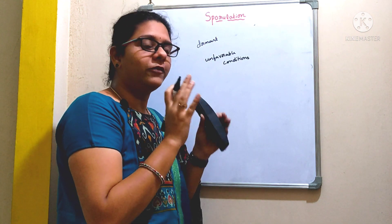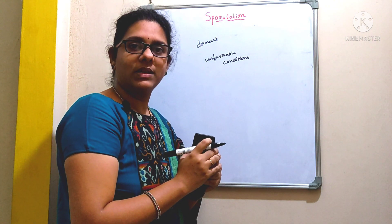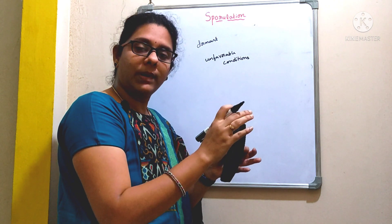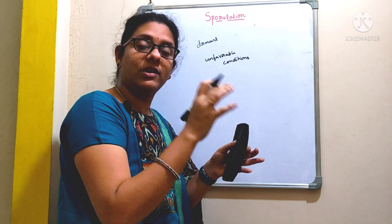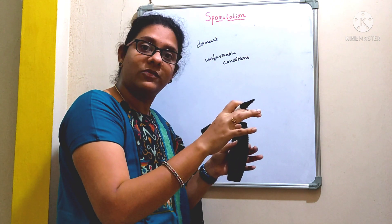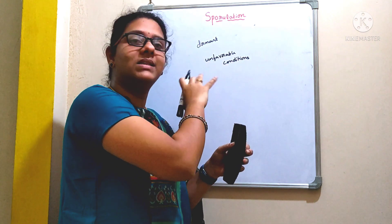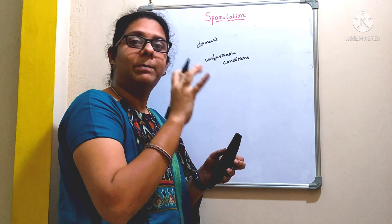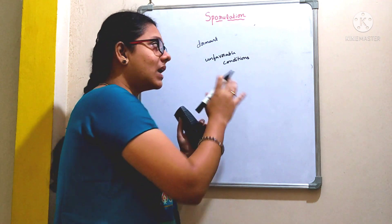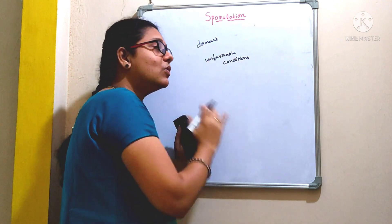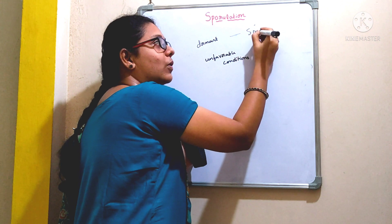First, suppose if you provide nutrients for the growth of an organism, if you provide optimum temperature, if you provide optimum pH, if you provide suitable aeration for the growth of an organism, that we call it as a favorable condition. But when the bacteria experience an unfavorable condition, it is going to form a dormant structure called spore.